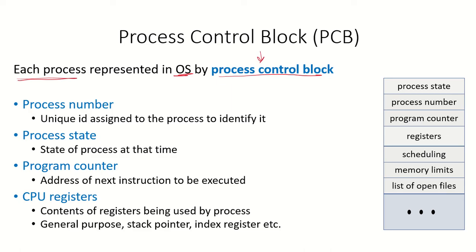So what does the PCB contain? It contains the process number — we know that each process is assigned a unique ID, which may also be known as the process ID. So the process ID or the process number is stored in the process control block.